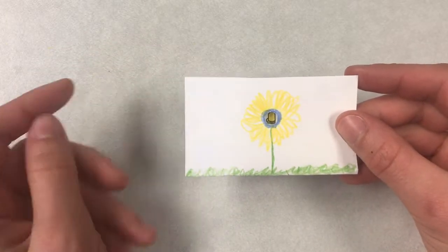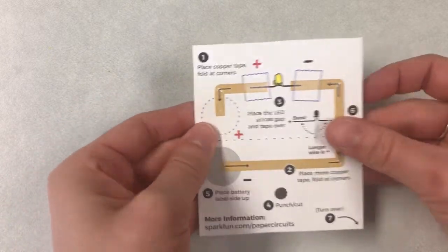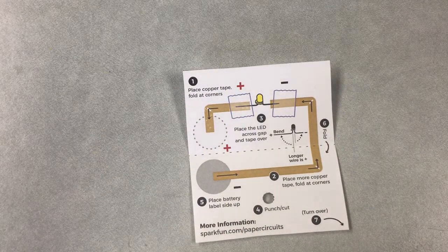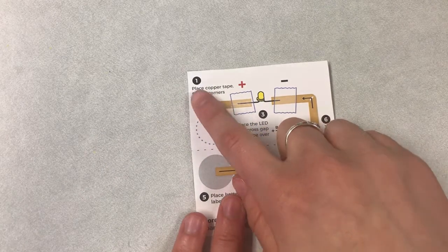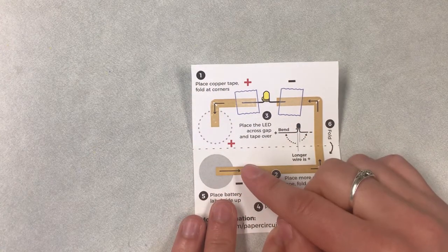Once you're finished with your drawing, we're ready to move on to the instructions on the back of the card. It's got some nice instructions on here for us. I can see right here that it says step one, place copper tape, fold at corners.